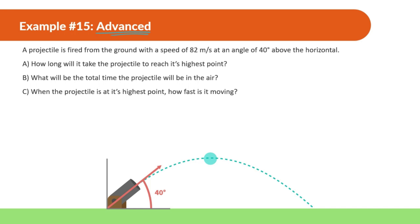A projectile is fired from the ground with a speed of 82 meters per second and an angle of 40 degrees above the horizontal. How long will it take the projectile to reach its highest point? So a lot of this is drawn out for us. Let's add some things — 82 meters per second — and we're trying to find the time it takes to reach its highest point.